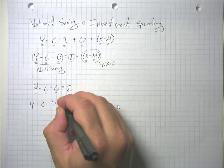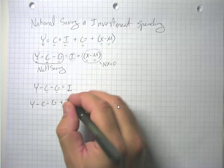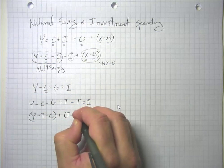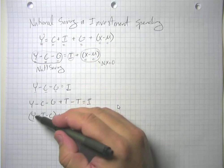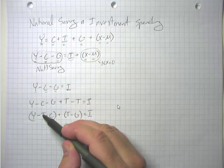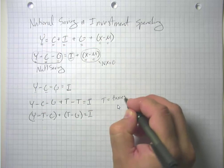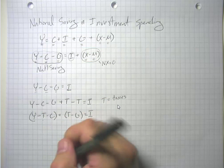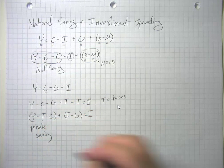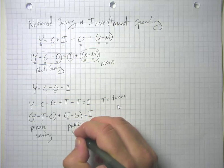I'm going to expand on this a little bit. I'm going to add T and subtract T from this side, which keeps everything equal since it cancels out, and then regroup the terms. The term in parenthesis means: here's all the income we received, subtract off taxes, so Y minus T is our after-tax income. We take Y minus T, subtract off consumption, and that is what the private sector has saved. If we take the government's income minus its spending, that is what the public sector has saved — public saving.